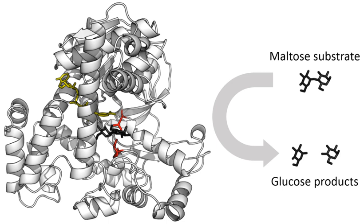First, binding forms a low-energy enzyme-substrate complex. Secondly, the enzyme stabilizes the transition state such that it requires less energy to achieve compared to the uncatalyzed reaction. Finally, the enzyme-product complex dissociates to release the products. Enzymes can couple two or more reactions, so that a thermodynamically favorable reaction can be used to drive a thermodynamically unfavorable one, so that the combined energy of the products is lower than the substrates. For example, the hydrolysis of ATP is often used to drive other chemical reactions.